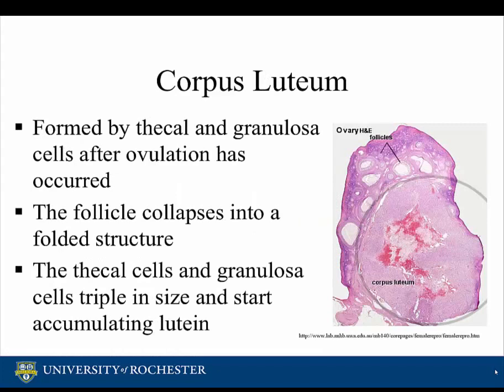The corpus luteum is formed by thecal and granulosa cells after ovulation has occurred, and is characterized by its folded structure. A few hours after ovulation, the thecal and granulosa cells triple in size and start accumulating lutein. On the picture, you can not only see the corpus luteum, but also a follicle.